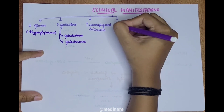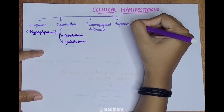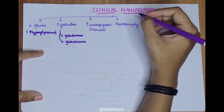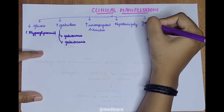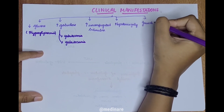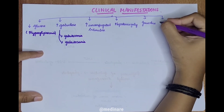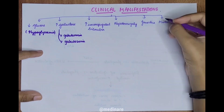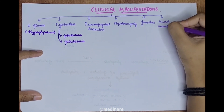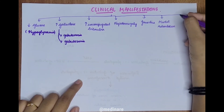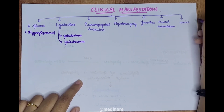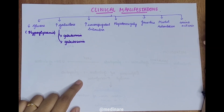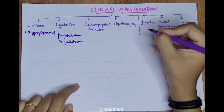Enlargement of the liver is also seen as a consequence of galactosemia, which is called hepatomegaly, along with jaundice and mental retardation. Aminoaciduria also occurs due to deposition of galactose-1-phosphate in the renal tubules.